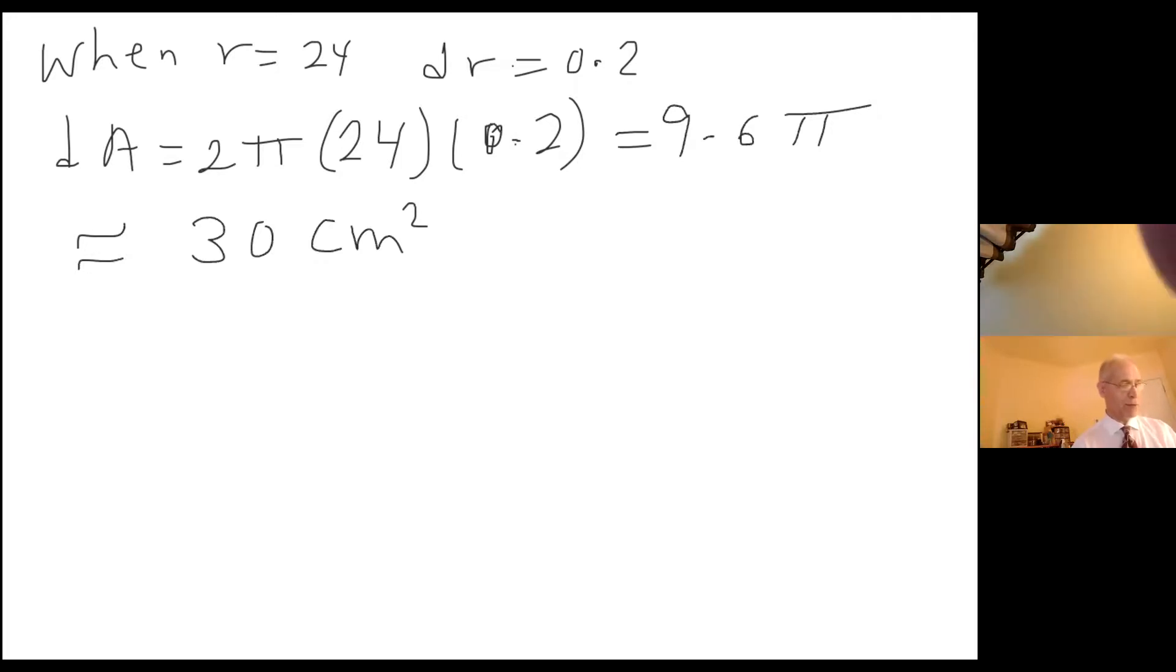Part B wants us to... Part B has two parts. The first part is asking for relative error in calculating the area of the disk. What is it that we know about relative error?